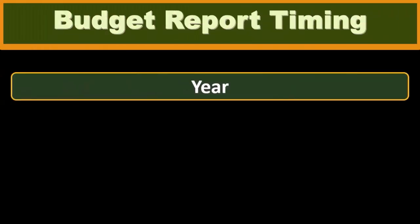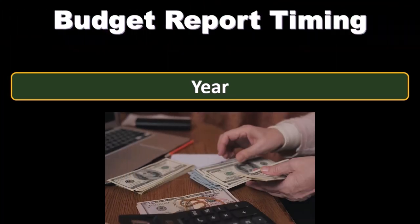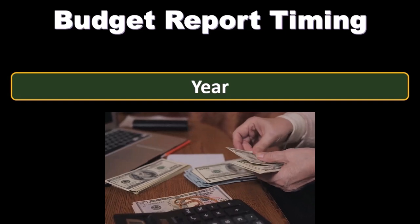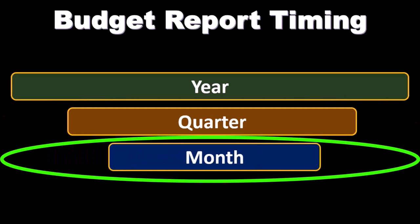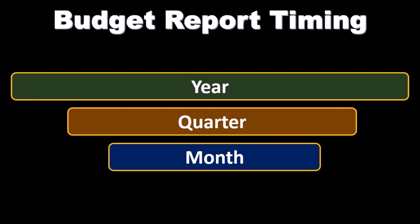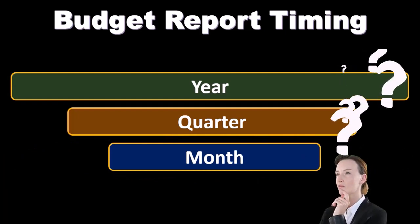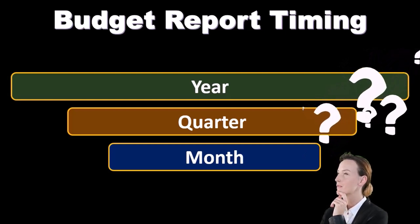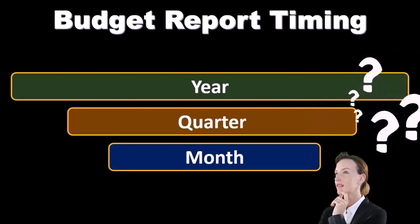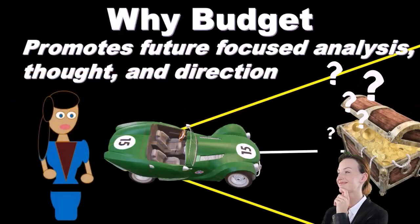Budget report timing. Typically, as we saw in prior presentations when looking at the static master budget, we're budgeting for a year's time period and then we break that down into quarters and often into months. That would be the standard budgeting process — we budget out into a year, break that out into quarters so we can review each quarter, and possibly break that out into months so we can review each month, comparing budgeted numbers to actual numbers.